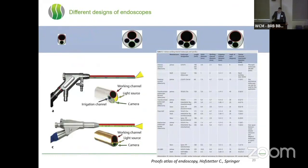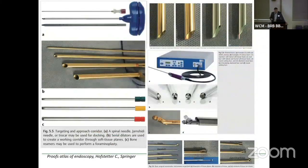We have different tools for the approach. We can start with the needle — the Jamshidi needle. We have dilators, working channels with different designs depending on what retraction you want to achieve and where you work. We have different burrs, from diamond to Rosén burr, flexible and non-flexible, plus forceps. There is a big variety of instruments, and every instrument has a certain application in the spinal canal.